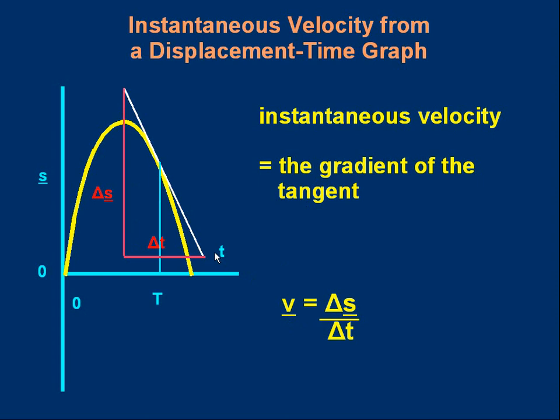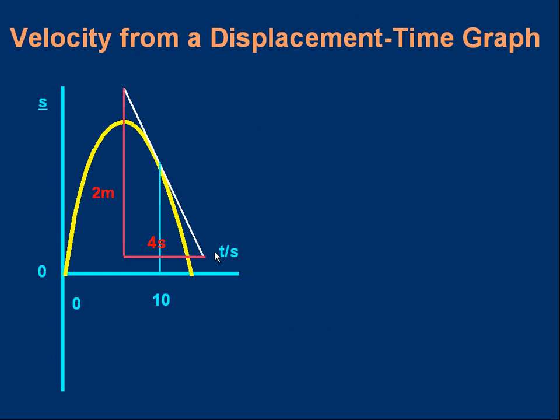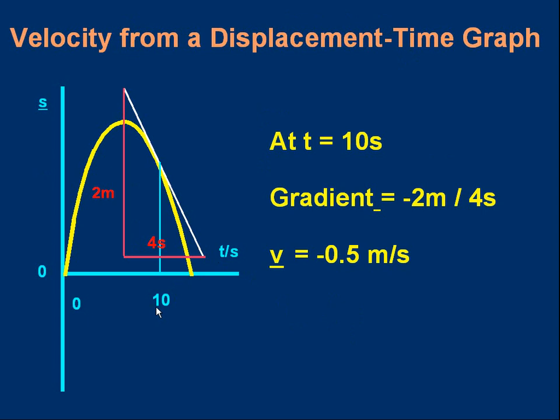So to finish off, here's one for you. What will be the velocity when the time is 10 seconds? Pause the video and work that one out. I hope you've realized when the time is 10 seconds, the gradient of the tangent will be minus 2 over 4. It's a downhill gradient, so it's negative, minus 2 over 4, minus 0.5 meters per second.